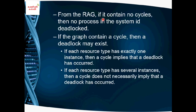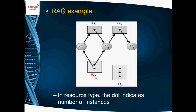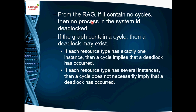If the graph contains no cycle, no process in the system is deadlocked. If the graph contains a cycle, there are two possibilities. If each resource type has exactly one instance and there is a cycle, then there is definitely a deadlock in the system.